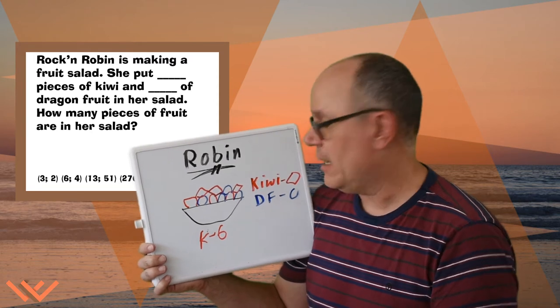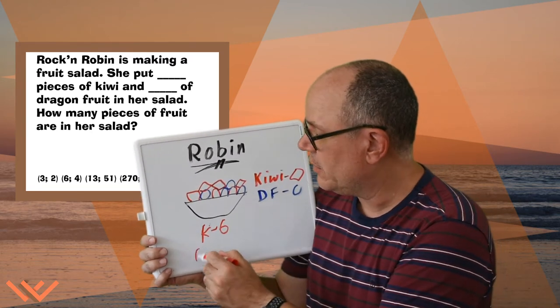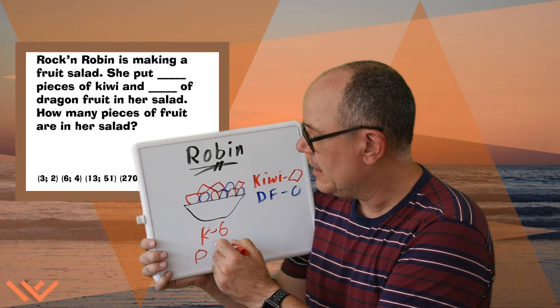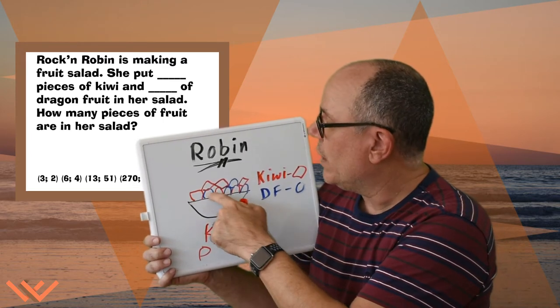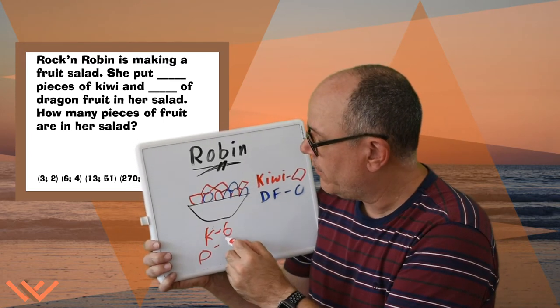And I have how many pieces of dragon fruit? Let's just do that, do a D. And this, again, we keep in a tally. One, two, three, four. So four.